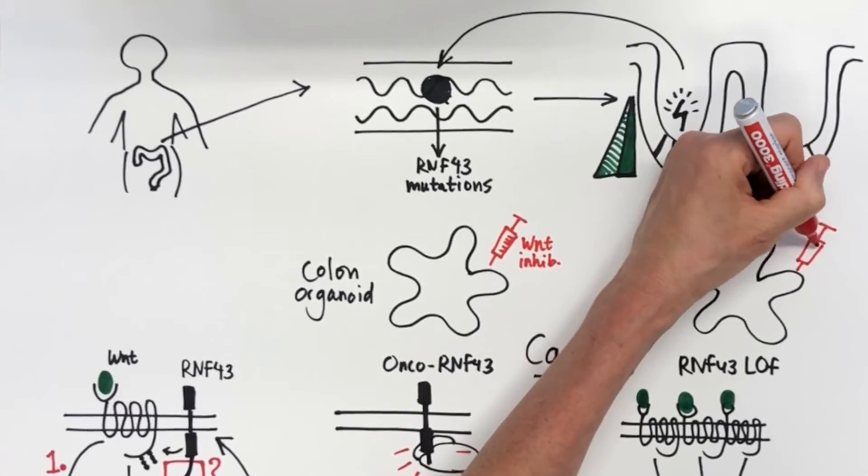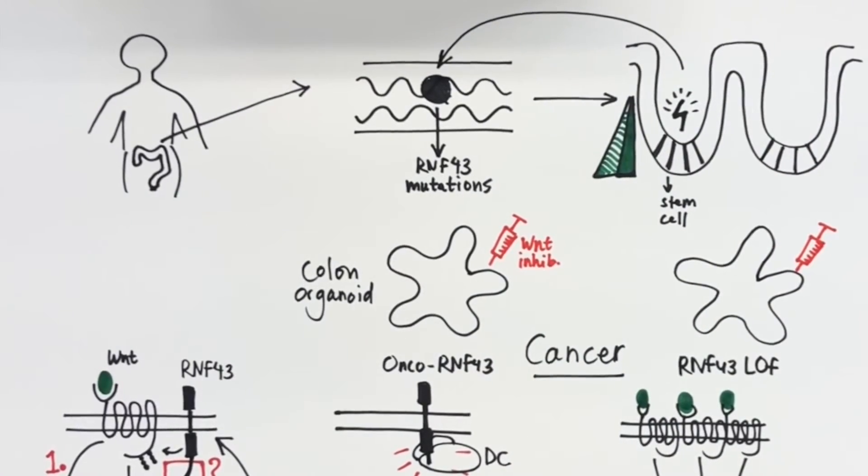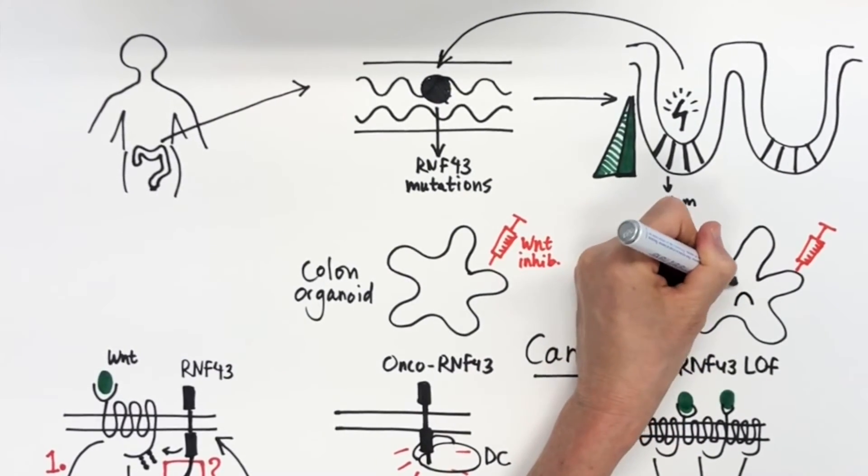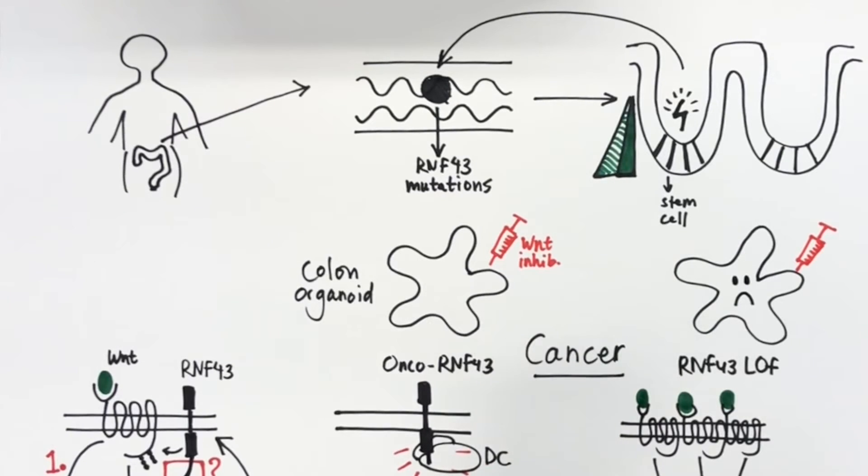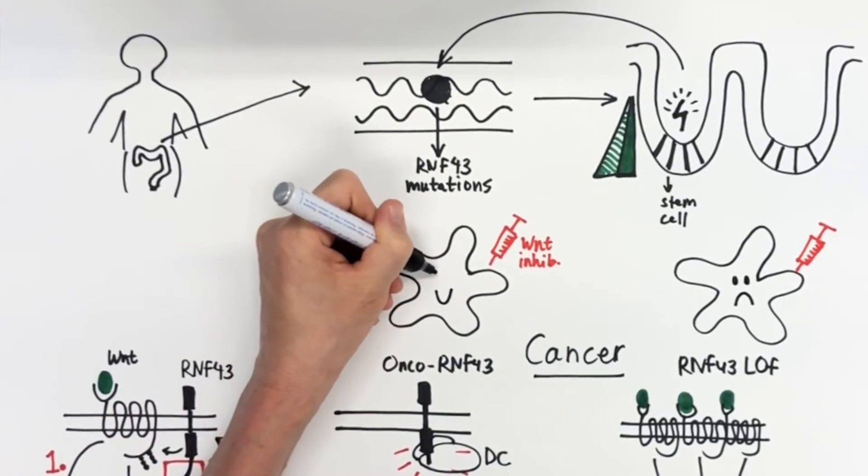Importantly, while treatment with inhibitors of Wnt production are known to block the growth of RNF43 loss-of-function organoids, we find that onco-RNF43 expressing organoids display a strongly decreased sensitivity to these inhibitors.